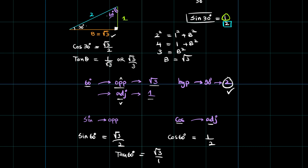Similarly, if this angle is 30, the top angle is 60 degrees. For 60, the opposite is root 3, so sine of 60 is root 3 over 2. For 60 degrees, the adjacent is 1, so cosine of 60 degrees is 1 over 2. For 60 degrees, the opposite is root 3 and adjacent is 1, so tangent of 60 is root 3 over 1.